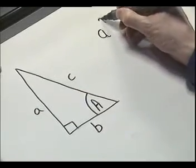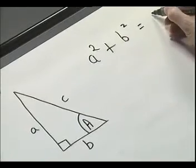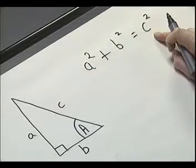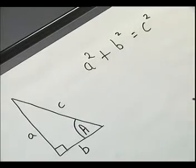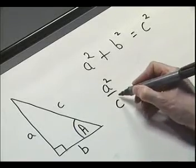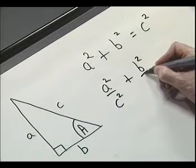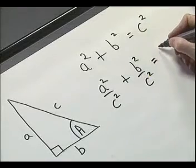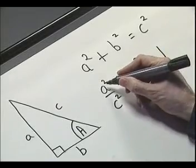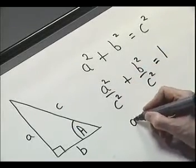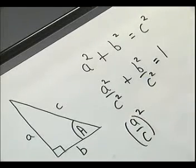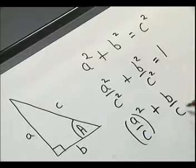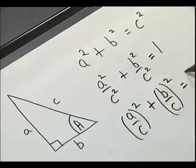Pythagoras' theorem tells us that A squared plus B squared is equal to C squared. Now let's divide throughout by C squared — divide every term in this equation by C squared. So we have A squared over C squared plus B squared over C squared is equal to C squared over C squared, which is just 1. We can rewrite A squared over C squared as (A over C) all squared, and similarly B squared over C squared as (B over C) all squared, still equal to 1.